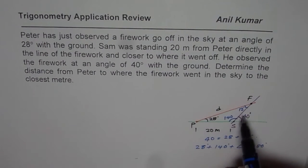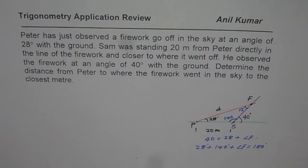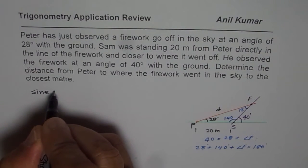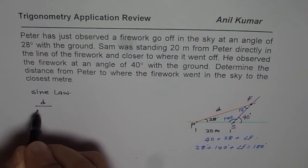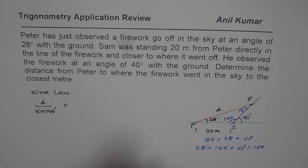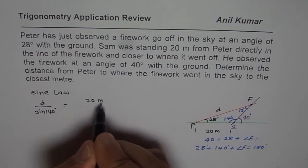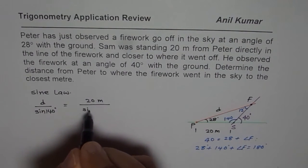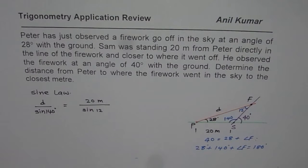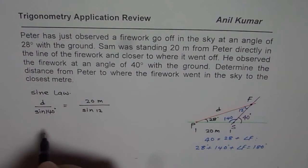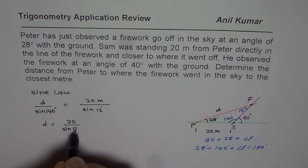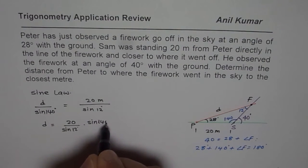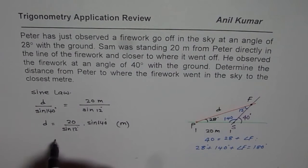Once we know this triangle — with one known side opposite a known angle — we can apply the sine law. Since we need to find D, we write: D over sine of 140 degrees equals 20 over sine of 12 degrees. Cross-multiplying gives D equals 20 divided by sine of 12 degrees, times sine of 140 degrees, in meters. Let us use the calculator to find the answer.